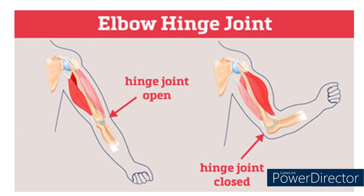Hinge joints: this type of joint is present in the knees, elbows, fingers and toes. It allows movement only in one direction — back and forth — like the hinges in a door.